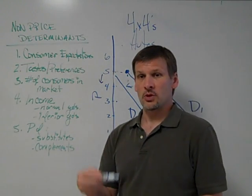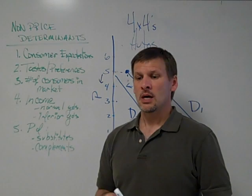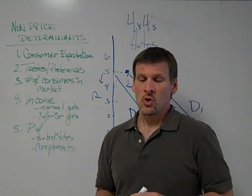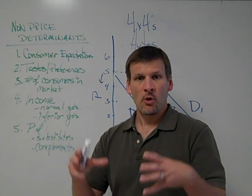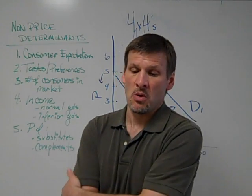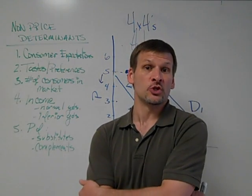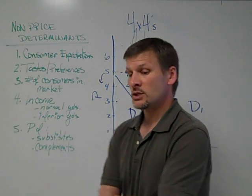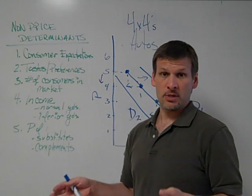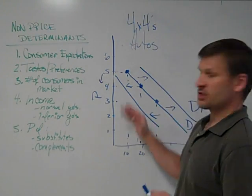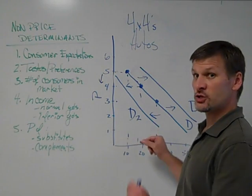The third non-price determiner, the third event that can affect our consumption, or the number of consumers in the market. Again, sticking with the automobile industry, there have been a reduction in the number of consumers in the automotive market in the last couple of years. People just simply cannot afford or think they cannot afford automobiles, and they're not willing anymore to purchase new vehicles, particularly new four-by-fours. So if we shrink the number of demanders in the market, as we have had happen in the United States in the last couple of years, we have a left shift in demand. So our initial demand curve will shrink to D2. Left shift, decrease in demand.